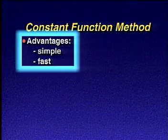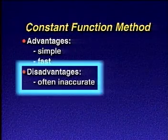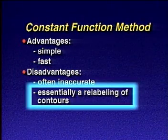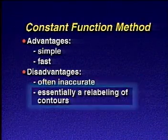Although the constant function method may be the simplest and fastest of all time-depth conversion techniques, it is usually the most inaccurate. The method is essentially a relabeling of the contours on a map.